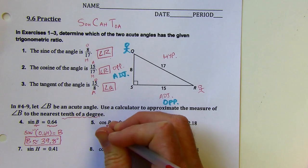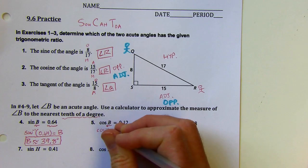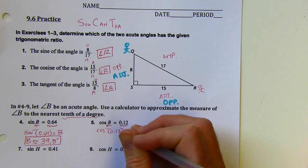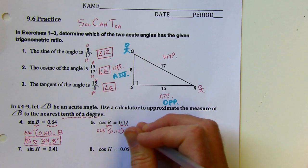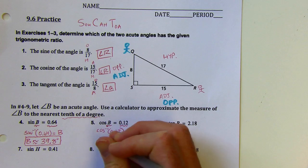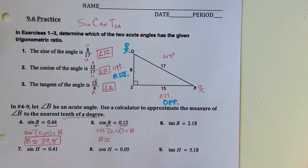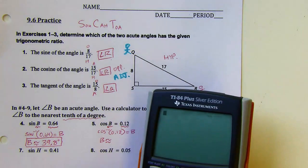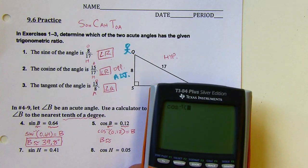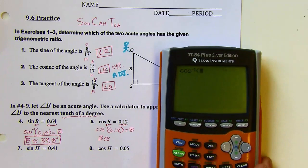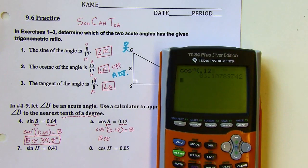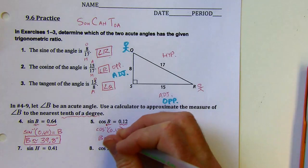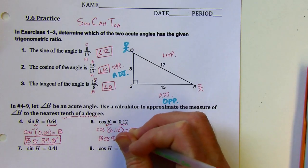For the cosine problem, I'm going to say the inverse cosine of 0.12 is going to equal B. I'll put that into my calculator — press second then cosine, then the decimal. And I've got roughly 83.1 degrees.